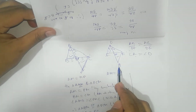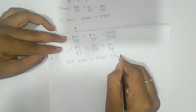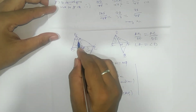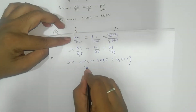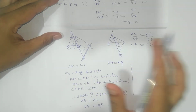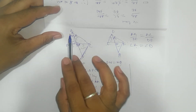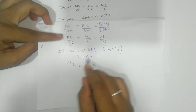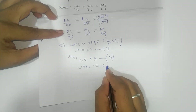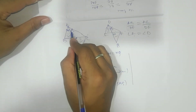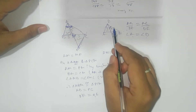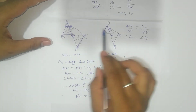Since triangle APC is similar to triangle DQF, their corresponding angles are equal, giving us angle 2 = angle 4. Similarly, angle 1 = angle 3. Adding these: angle 1 + angle 2 = angle A and angle 3 + angle 4 = angle D. Therefore angle A = angle D. With AB/DE = AC/DF (given) and angle A = angle D, triangle ABC is similar to triangle DEF by SAS criteria. Hence proved.